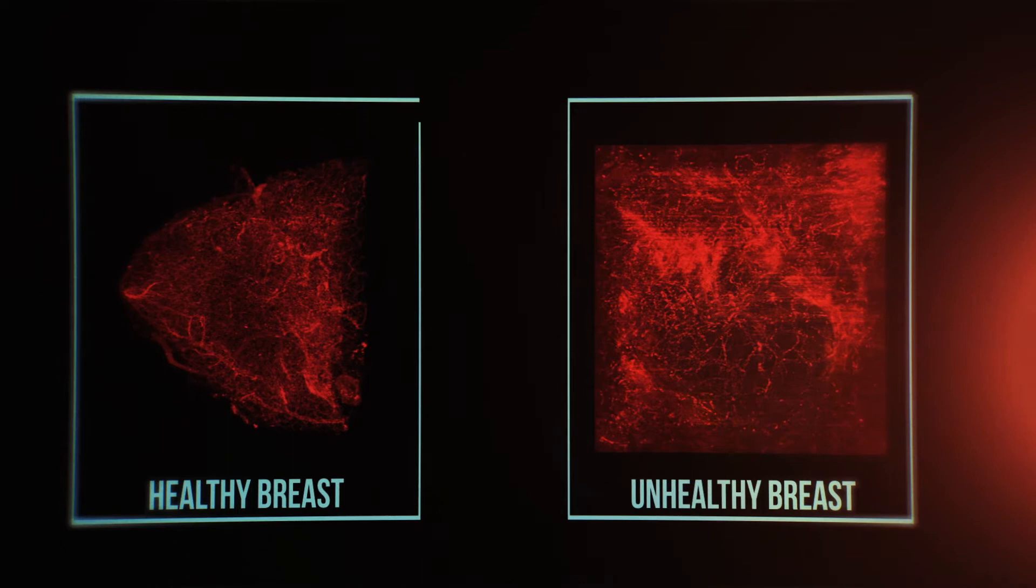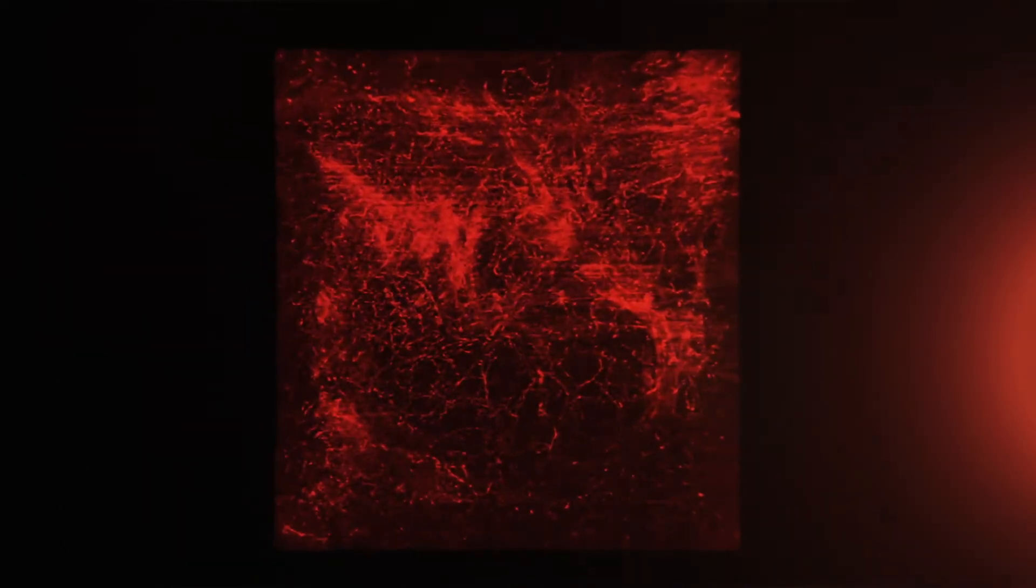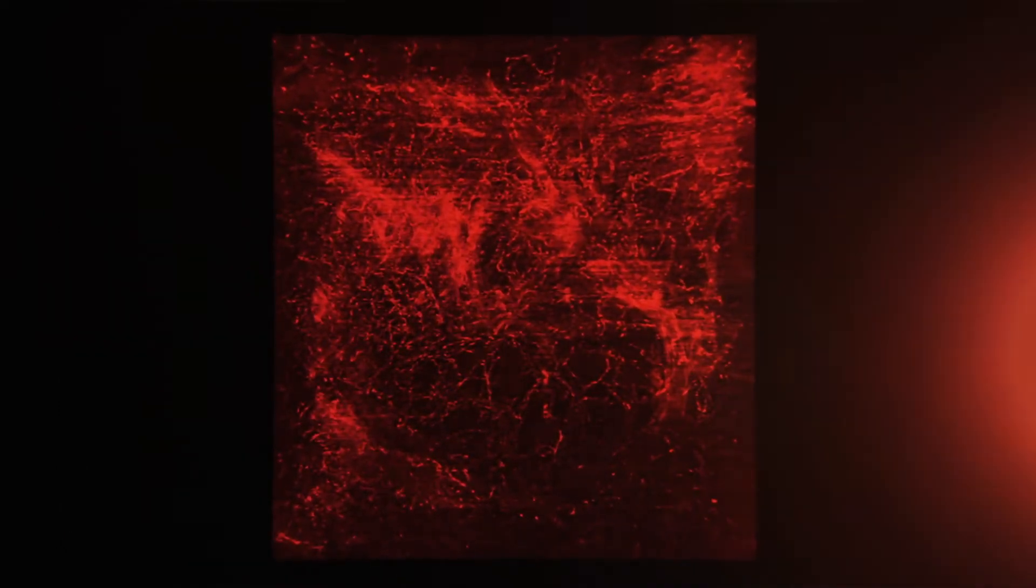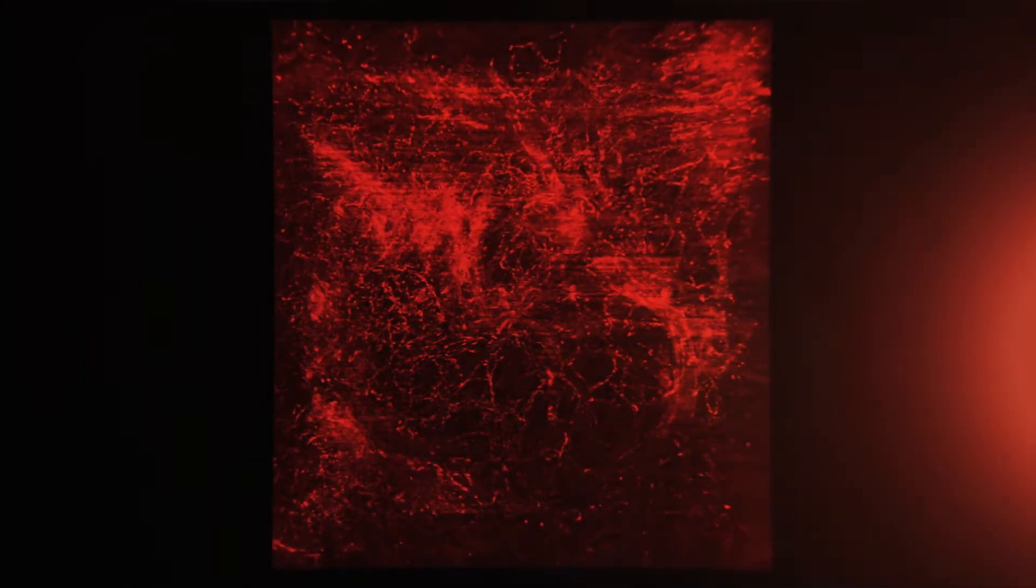Compared to the normal breast, here you can see that the blood vessels are much more irregular. It is almost like a chaos of blood vessels growing in all different directions and in all different dimensions.